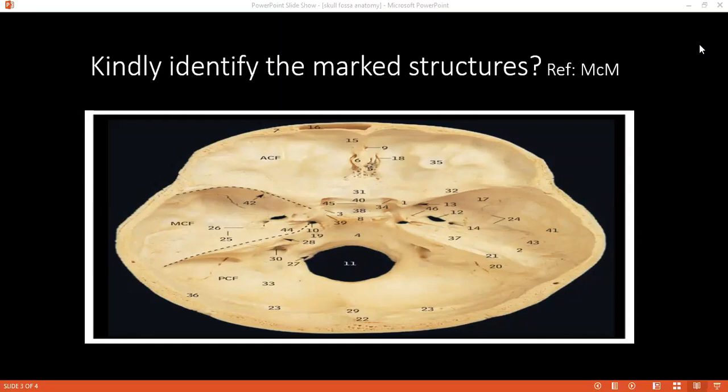It contains both the lobes, and the middle portion contains the pituitary gland in the sella turcica.